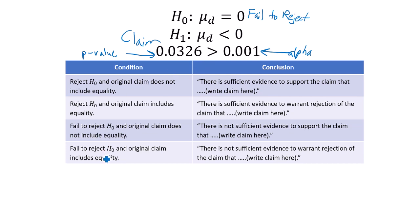So we fail to reject the null hypothesis. Our original claim does not include equality. So we have the general format of our conclusion here, which happens to be: there is not sufficient evidence to support the claim that the mean difference of post-test from pre-test is less than 0. So that's an example of using the matched pairs method. Thanks for watching.